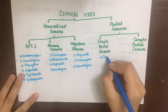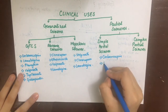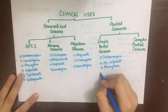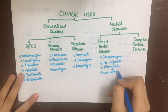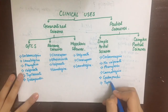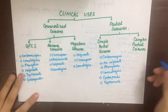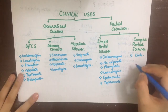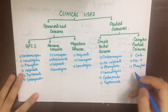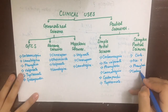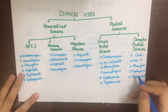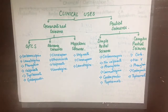Partial seizures arise in a small part of the brain. Simple partial seizures affect a small locus with no loss of consciousness; drugs used are carbamazepine, sodium valproate, phenytoin, lamotrigine, gabapentin, and topiramate. Complex partial seizures arise in one lobe of the brain; the chief difference from simple partial seizures is impaired awareness of the surroundings. The drugs used are carbamazepine, valproate, phenytoin, lamotrigine, gabapentin, and topiramate.